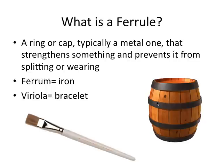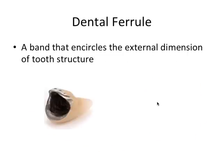So how does this relate to dentistry? A dental ferrule is defined as a band that encircles the external dimension of tooth structure. Basically the dental ferrule includes both the axial walls and the margin, right at the edge here, which engage the axial walls of the prepared tooth.